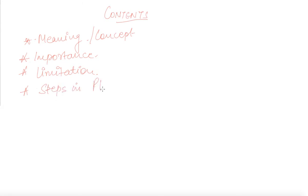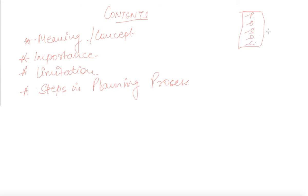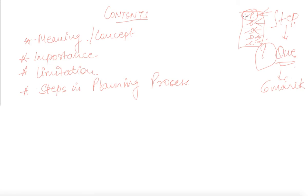After that, we will learn the steps in the planning process. As per the examination point of view, we have five functions of management: planning, organizing, staffing, directing, and controlling. Each function has its own steps. At least one question is compulsory in your exam for six marks from one of these functions, so please go through each and every step of every function.